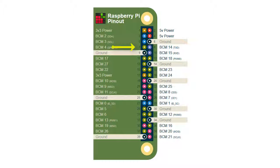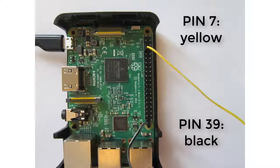We are using GPIO pin 7, where we plug in the yellow wire. We are using ground pin 39, where we plug in the black wire. You can also choose a different ground pin, like pin 6.